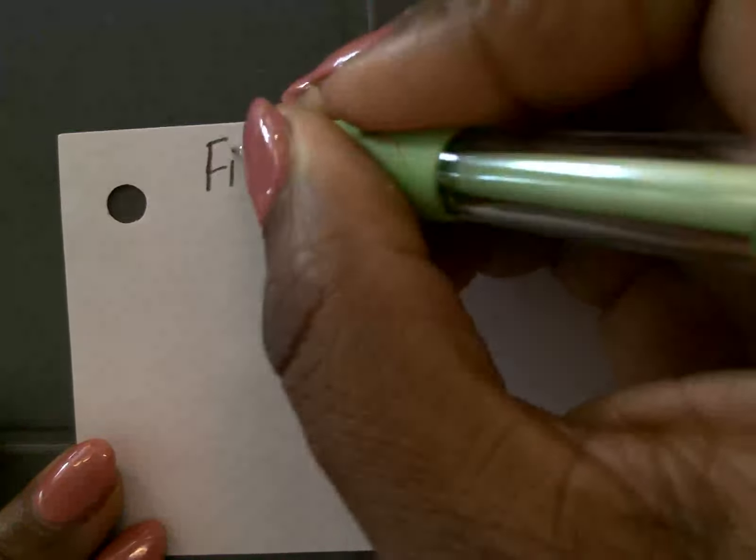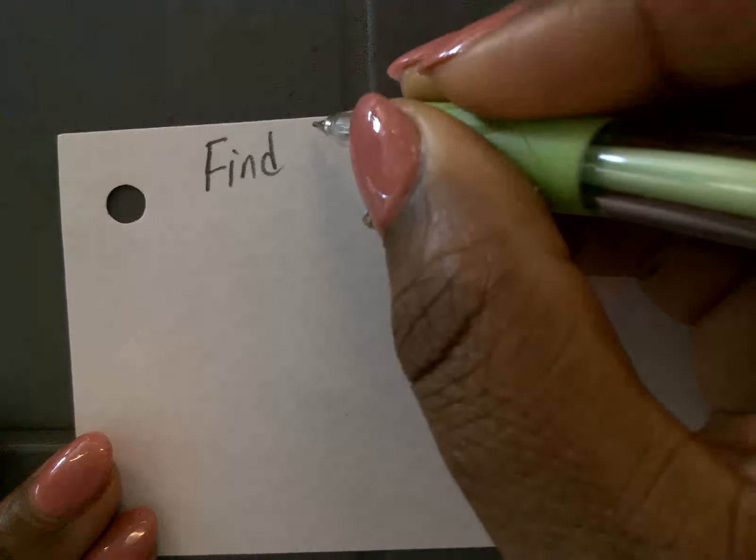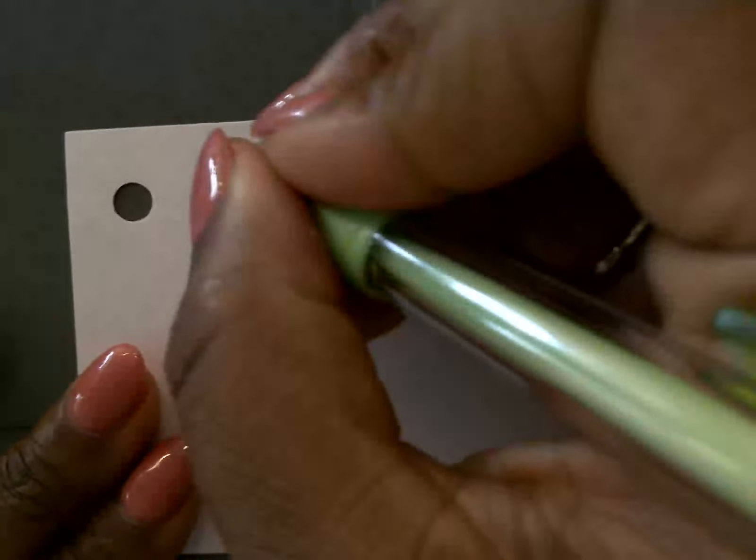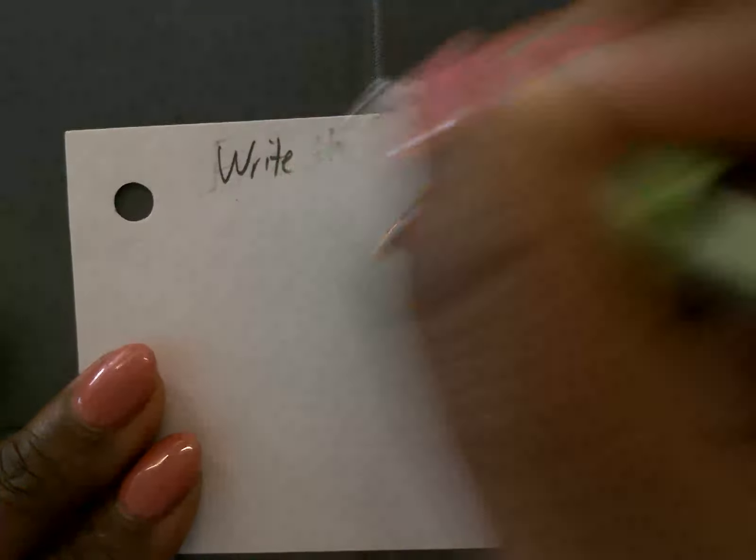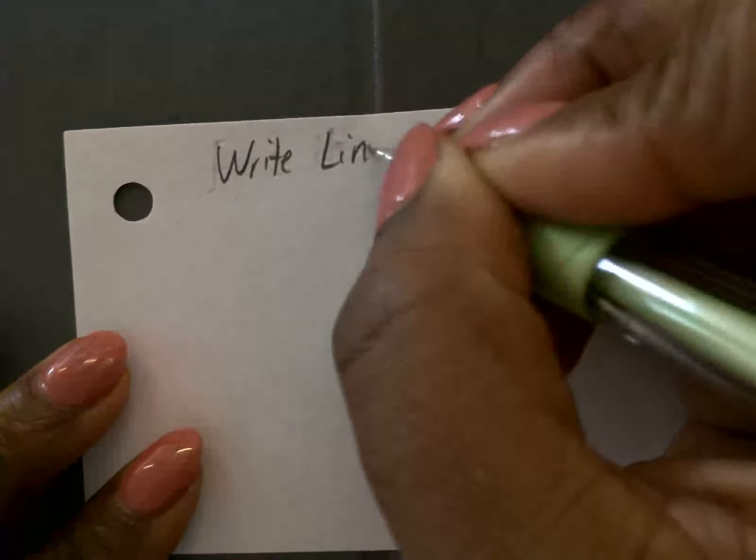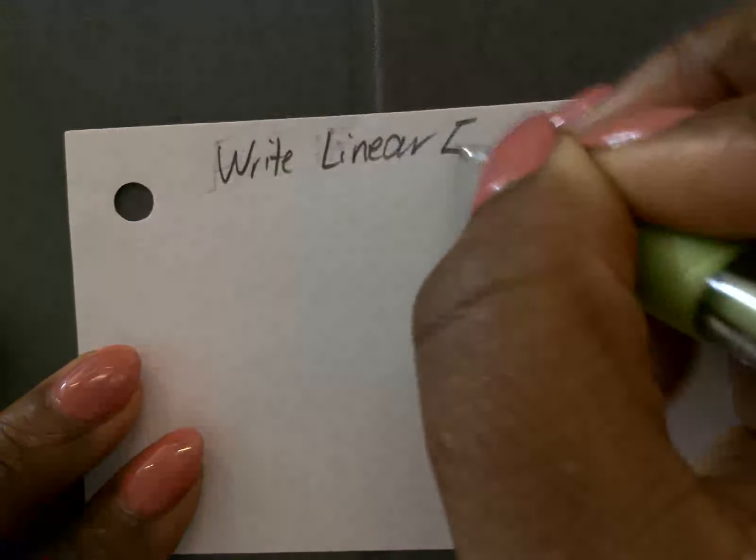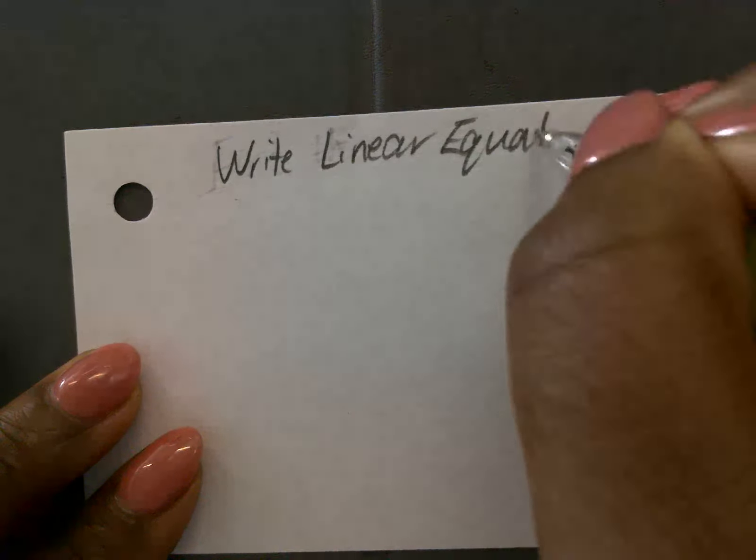All right, at the top part of our card, we're going to put 8 in the corner, and we are going to do linear regression in the calculator. We're going to find, well, I don't want to say find a line of best fit. We're going to write a linear equation from the calculator.